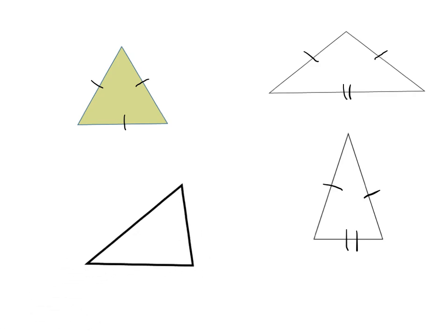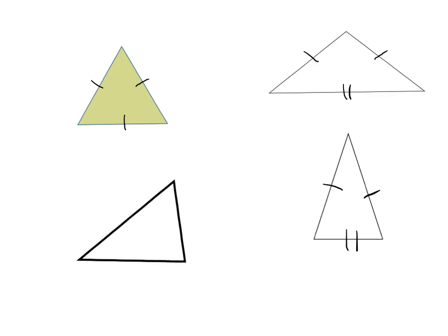And then this triangle — the way I drew it, I was trying to show that all three side lengths are different from each other. So the way I would show that is one dash, two dashes, three dashes. This is my way of showing that all three side lengths are different from each other. There are no matching side lengths.